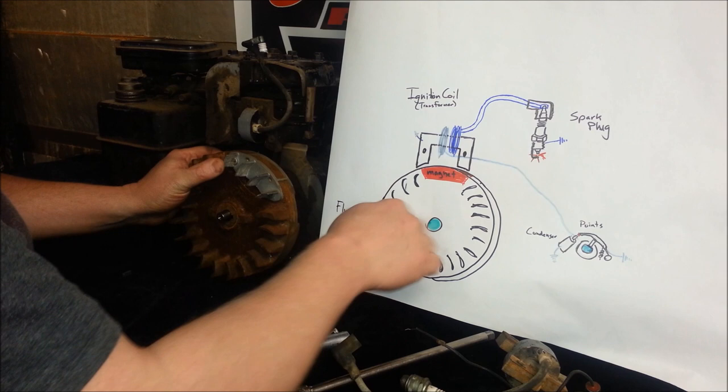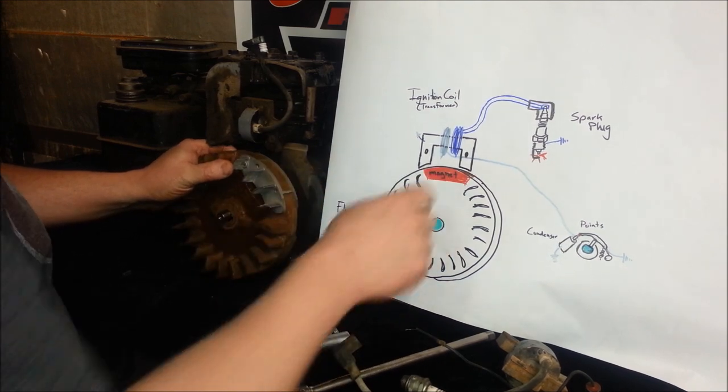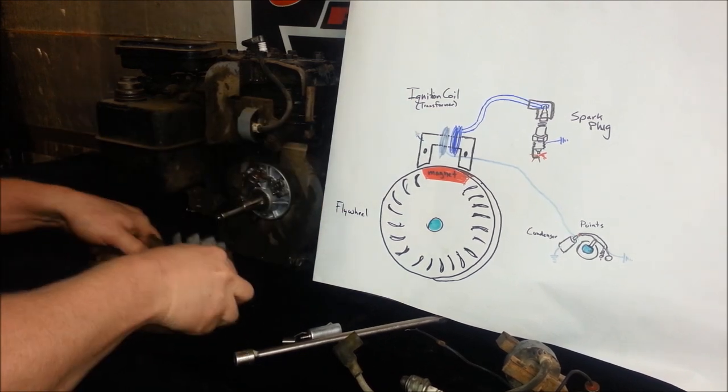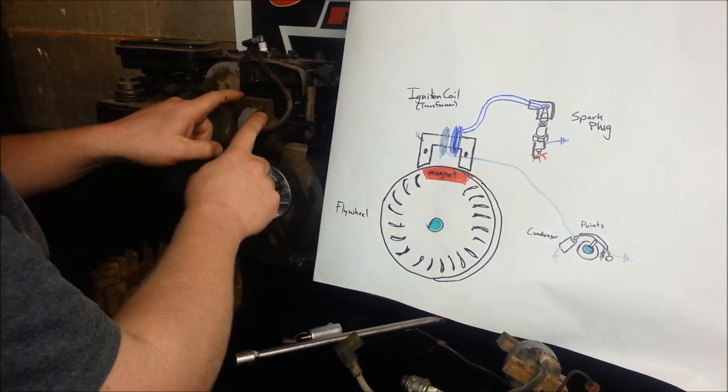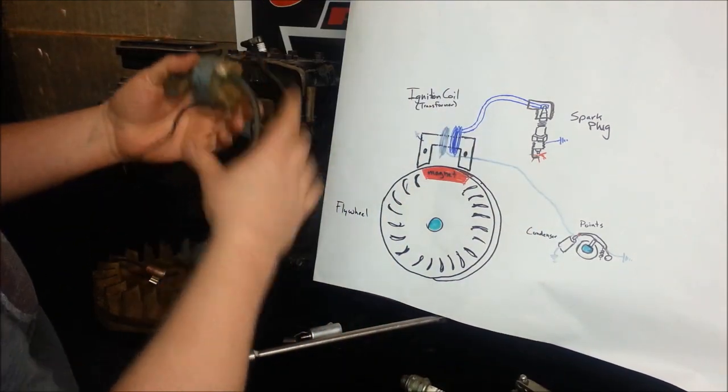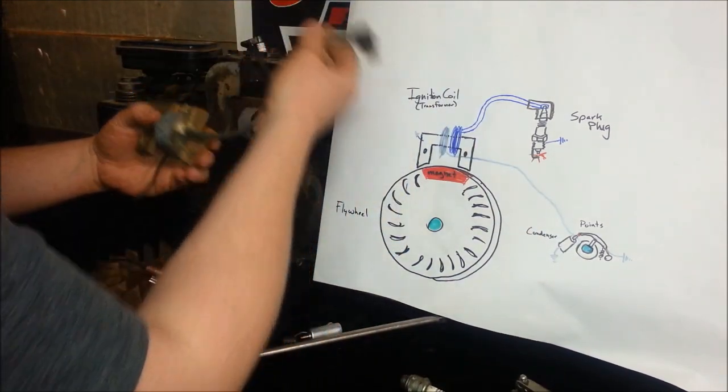First you have your flywheel. You have a magnet in the top. You've got your magnet. So, basic flywheel. We have our ignition coil right here. It comes up to our spark plug. Here's a better view of it. So you've got an ignition coil with spark plug lead.